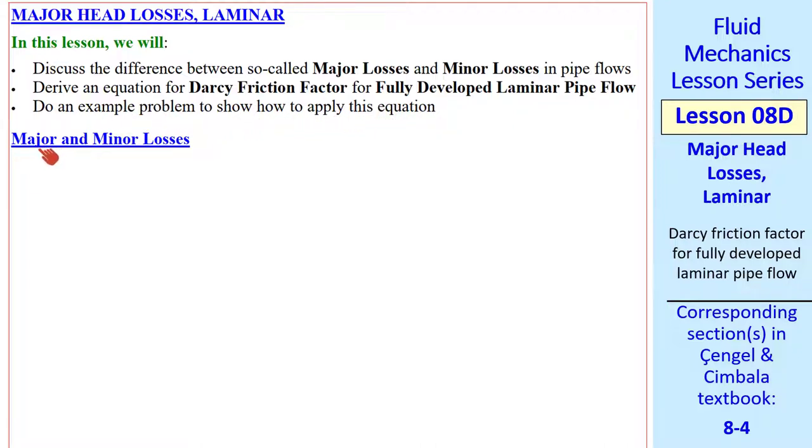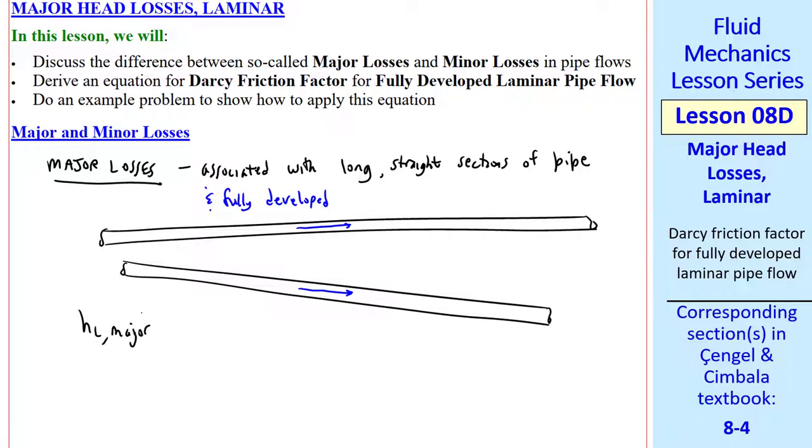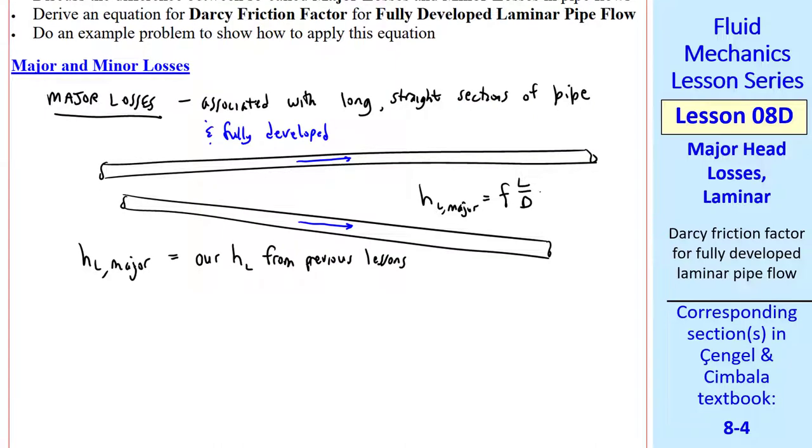First let's look at the terminology of major and minor losses. Major losses are those associated with long, straight sections of pipe where the length is much longer than the diameter and the flow is fully developed. We use the notation HL major for these major losses. This is our HL from previous lessons, so we'll use the same equation: HL major is F L over D, V squared over 2G. From now on we'll use HL major to mean what we used to call HL.